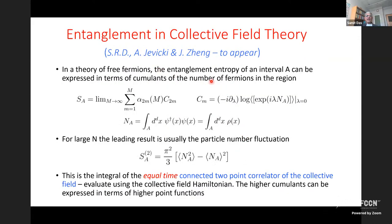For free fermions, the entanglement entropy of an interval can be expressed in terms of the number of fermions in the region. The leading result is in fact the particle number fluctuation — this is how condensed matter physicists measure entanglement in many-body fermion systems. The operator measuring the number of fermions is the collective field itself, so the integral is nothing but the equal-time connected two-point correlator of the collective field, which we can evaluate using the collective field Hamiltonian.